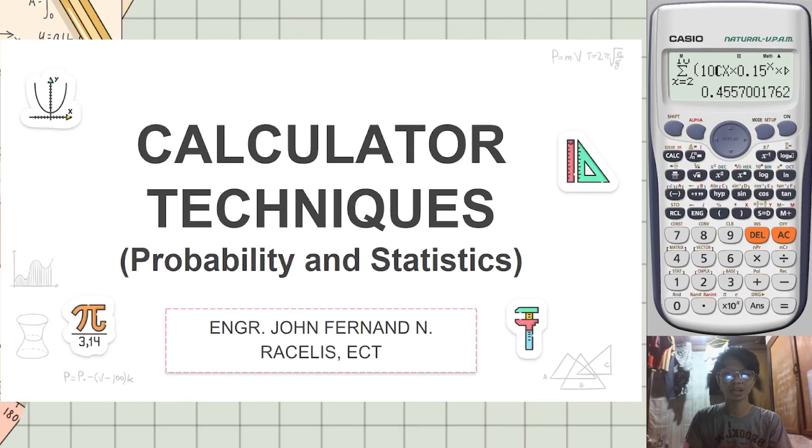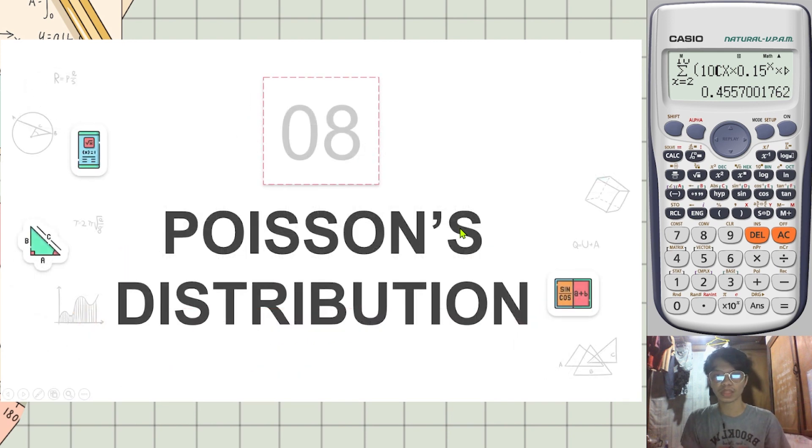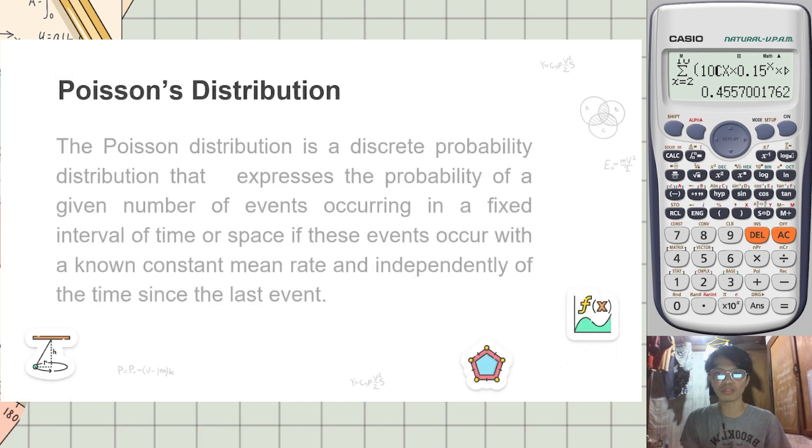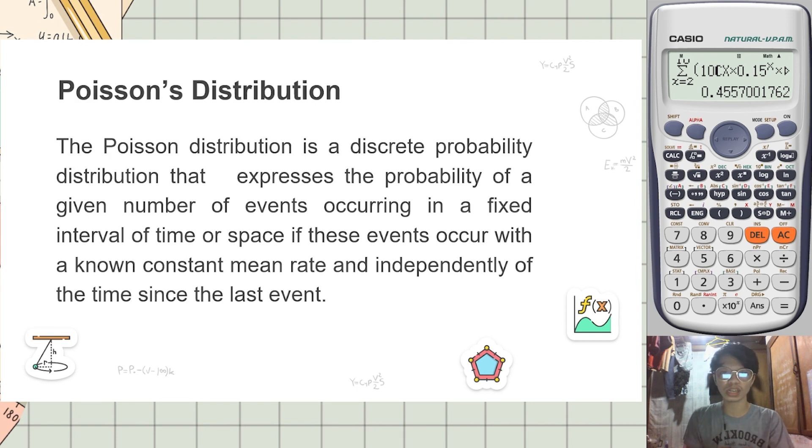Good day engineers and welcome back to another calculator technique video for probability and statistics. In this video we will discuss the Poisson's distribution. Let us first define what is the Poisson distribution. Poisson distribution is a discrete probability distribution